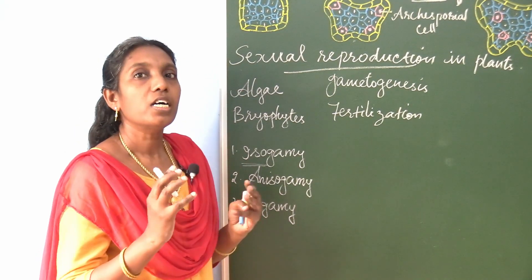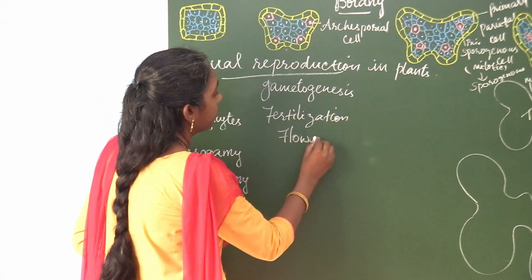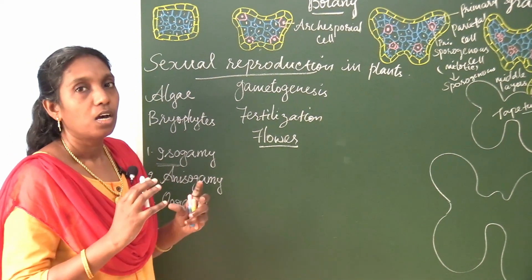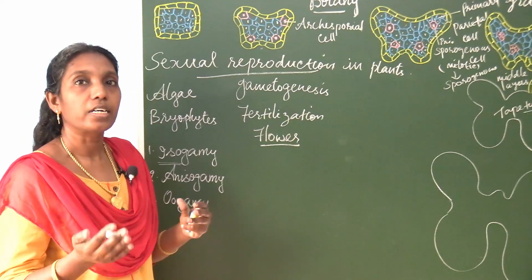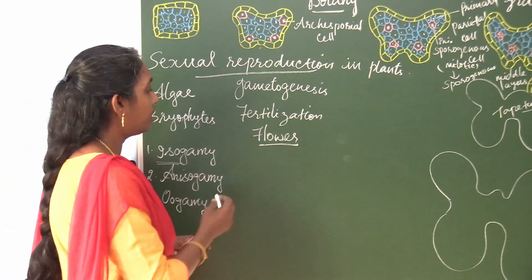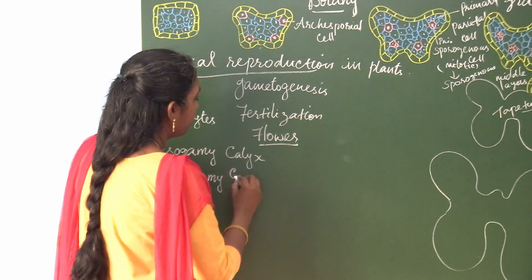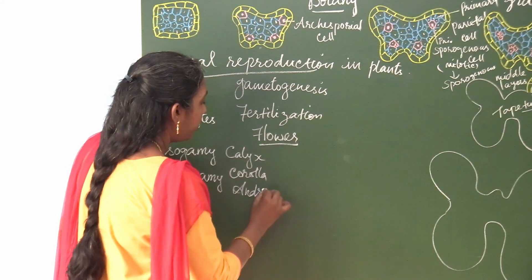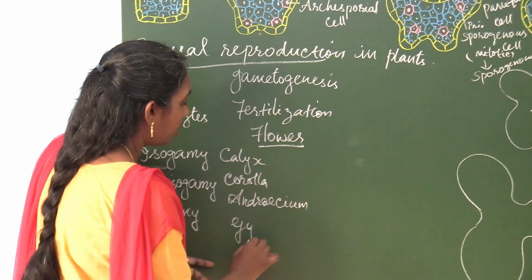Flower is very important — you all know about the parts of the flower. Flower is the reproductive organ of the plant. Already you learned about the parts of the flower, which consist of four different whorls named as calyx, corolla, androecium, and gynoecium.